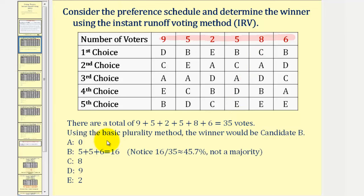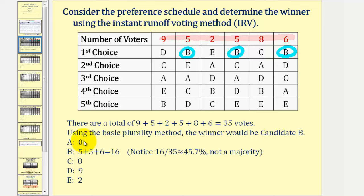Also notice that using the basic plurality method, the winner would be candidate B. Candidate B has 5 plus 5 plus 6, or 16 first choice votes, giving it more than any other candidate. Candidate A has 0 first place votes, candidate C has 8, candidate D has 9, and candidate E has 2.